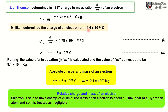The charge of the electron E is equal to 1.6 × 10⁻¹⁹ coulomb. Putting the value of E in the equation, we can calculate M, and the value of M comes out to be 9.1 × 10⁻³¹ kg. So the absolute charge and mass of an electron are now determined.